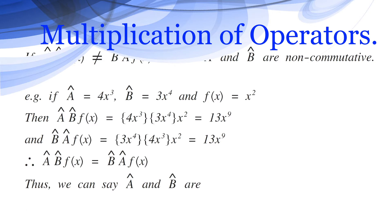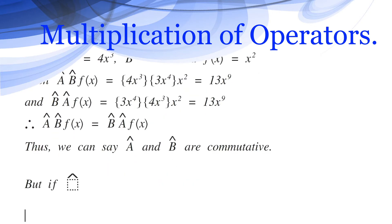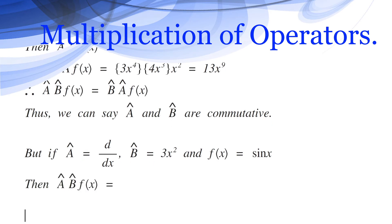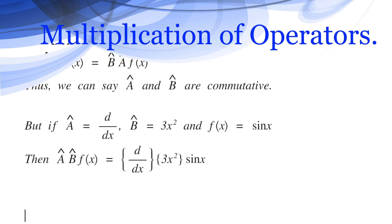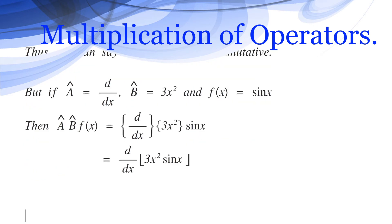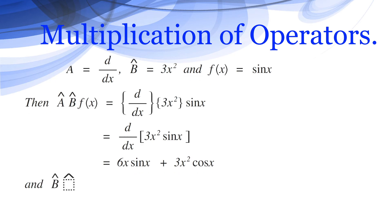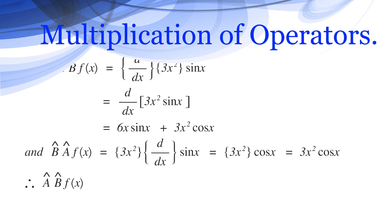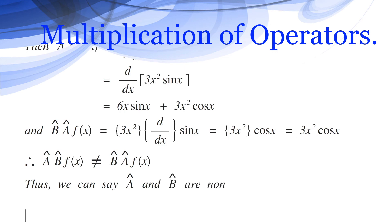But if Â = d/dx and B̂ = 3x² and f(x) = sin x, then ÂB̂f(x) = d/dx(3x² sin x) = 6x·sin x + 3x²·cos x, and B̂Âf(x) = 3x²·(d/dx of sin x) = 3x²·cos x. Therefore ÂB̂f(x) ≠ B̂Âf(x). Thus, Â and B̂ are non-commutative.